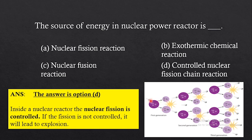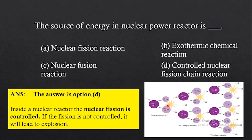In nuclear fission, uranium nuclei act as the parent nuclei. One neutron comes and hits the parent nuclei, and it splits into two smaller nuclei — in this figure, krypton and barium — which are called daughter nuclei.